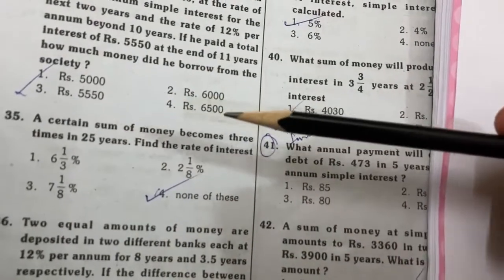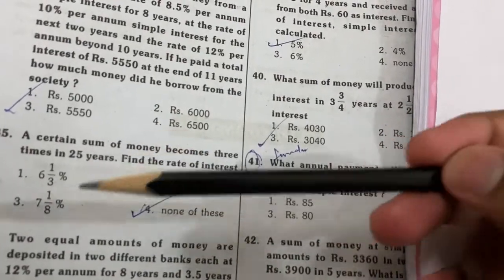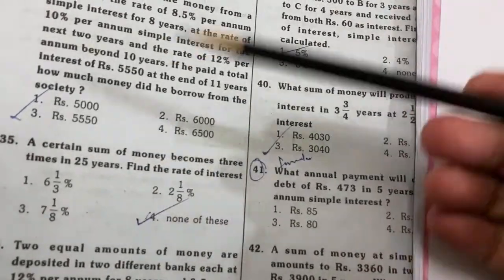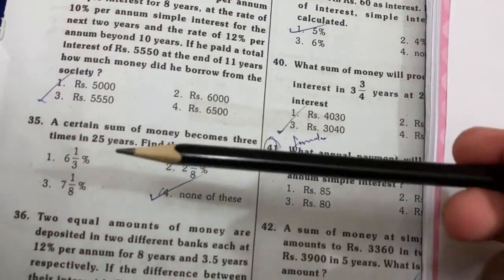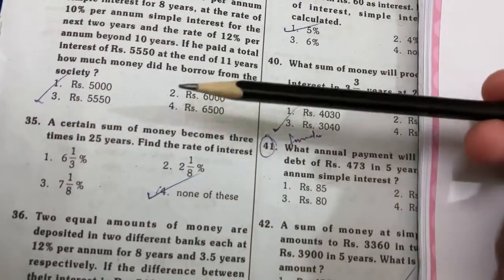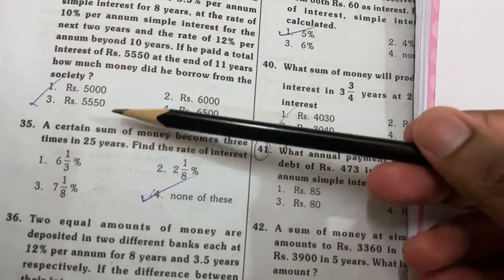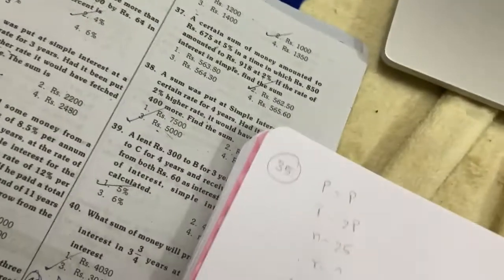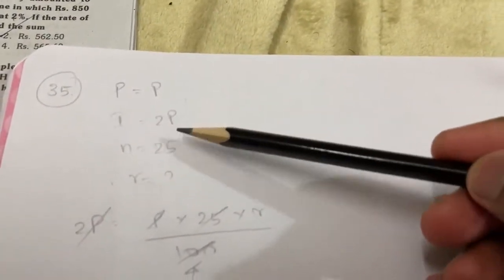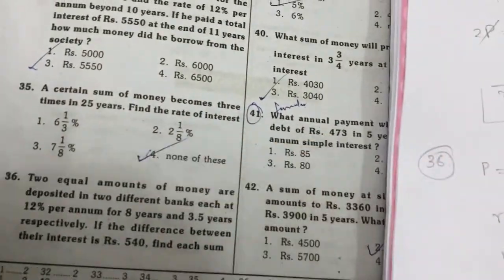A certain sum of money becomes 3 times in 25 years — find the rate of interest. The interest equals 2P, and using the SI formula 2PR, we get R equals 8%.